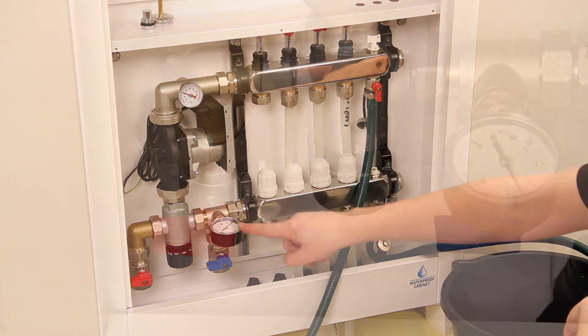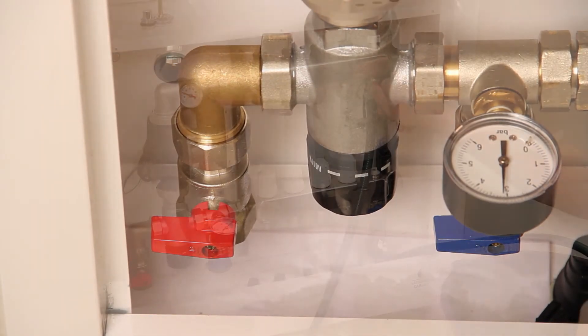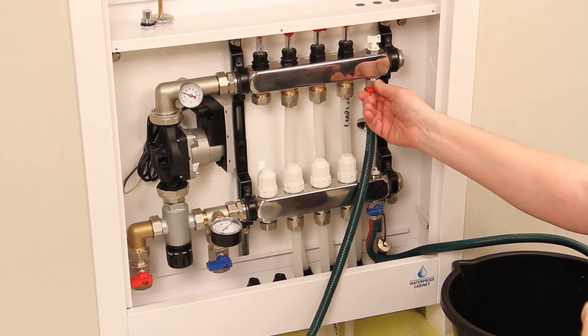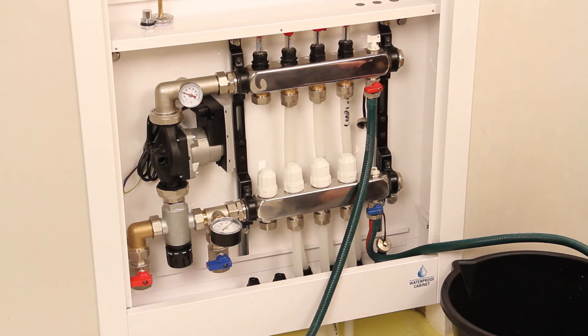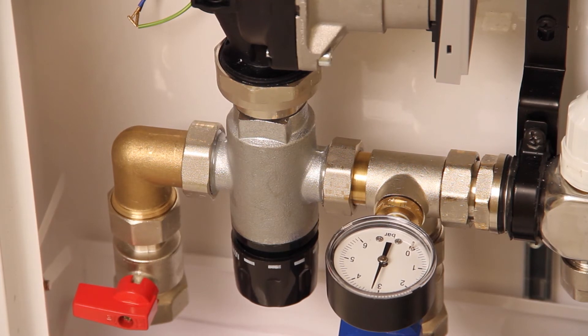The pressure gauge will start to climb. Allow the pressure to climb up to three or four bar and close the fill drain tap on the flow bar. This will seal the system and hold it under pressure test. You can now turn off the cold water hose supply.